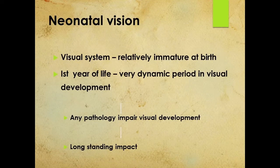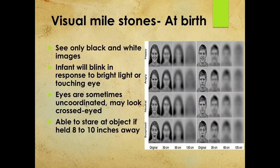When the visual system is immature, it is better to detect diseases at an early stage and treat them to prevent permanent visual loss. The visual system is relatively immature at birth, and most development occurs during the first year of life, which is a very dynamic period. Any pathology or insult that impairs visual development during this period can have a long-standing impact. At birth, babies only see blurry images and appreciate black and white contrast. They can see the mother's face at the edges and the eyes, at a distance of around 8 to 10 inches. The eyes are sometimes uncoordinated and may look cross-eyed.